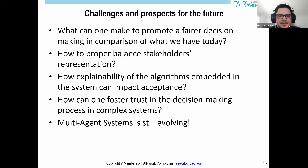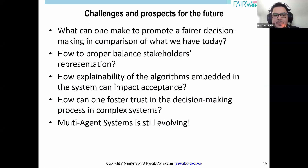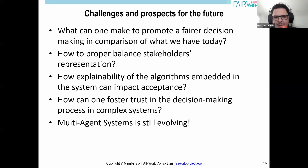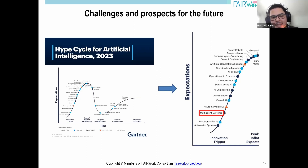Regarding challenges and prospects for the future of MAS in Fair Work, some interesting questions being worked on include: What can be done to promote fairer decision-making? How to properly model and experiment with agent interactions to achieve fairer decisions? How to properly balance stakeholder representation through MAS? What characteristics should be considered when balancing representation in decision-making processes? How can explainability of embedded algorithms impact acceptance, and how can one foster trust in complex decisions? In a recent Gartner Hype Cycle, multi-agent systems were listed in the innovation trigger, and we are thrilled to be part of pushing this technology ahead.